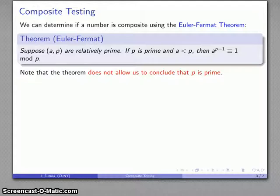However, the important thing here is that the theorem does not allow us to conclude that p is prime. p is prime is the antecedent. It's what we're starting with. What we can conclude is a to the power p minus 1 is congruent to 1 mod p.